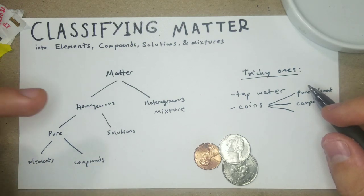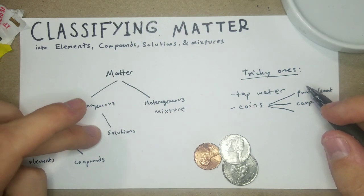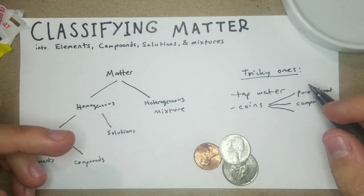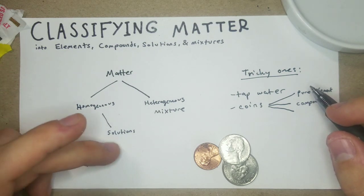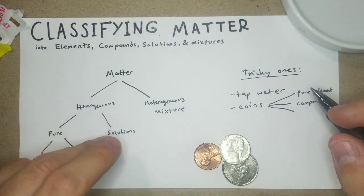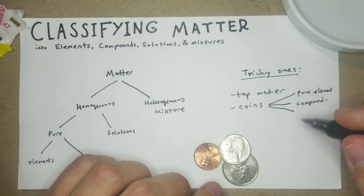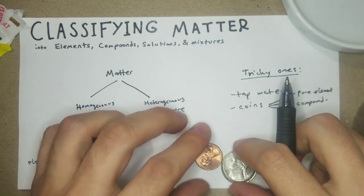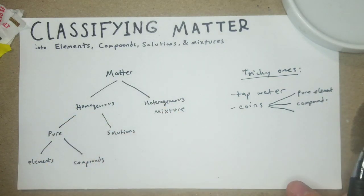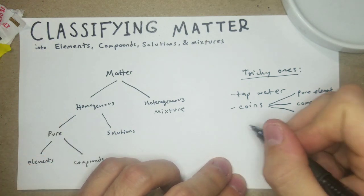My professor defined solutions as it didn't have to have water in it, it didn't have to even be liquid. A solution just meant that it was something that's homogeneous that isn't a mixture and isn't an element or a compound. By those definitions you can almost define coins as just about anything. Another one is gasoline.